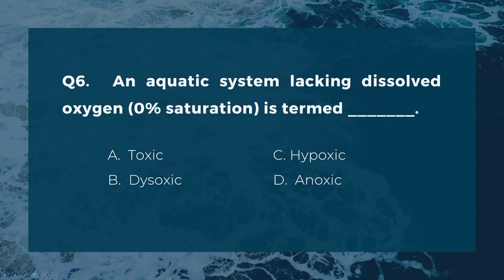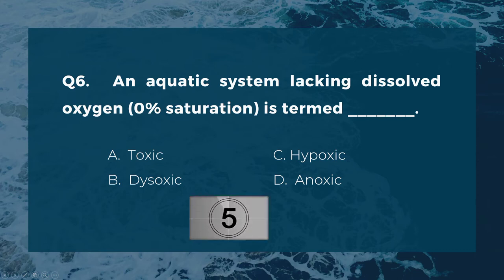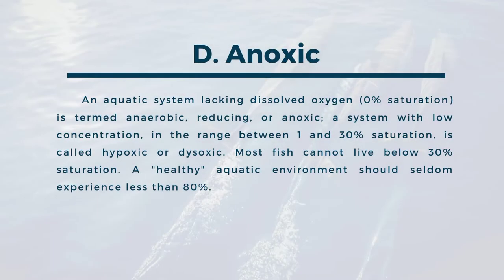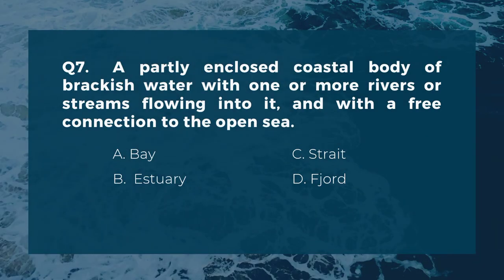Question six: an aquatic system lacking dissolved oxygen (0% saturation) is termed blank. A) toxic, B) disoxic, C) hypoxic, D) anoxic. The correct answer is D, anoxic. An aquatic system lacking dissolved oxygen at 0% saturation is termed anaerobic, reducing, or anoxic. A system with low concentration in the range between 1 and 30% saturation is called hypoxic or disoxic. Most fish cannot live below 30% saturation; a healthy aquatic environment should seldom experience less than 80%.